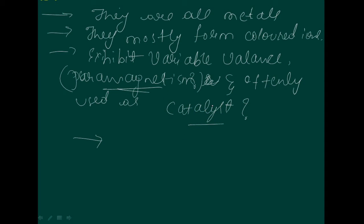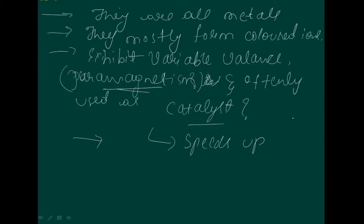A catalyst is a substance that speeds up a chemical reaction but is not consumed by the reaction. The catalyst can be recovered chemically unchanged at the end of the reaction. It is used to speed up the reaction.